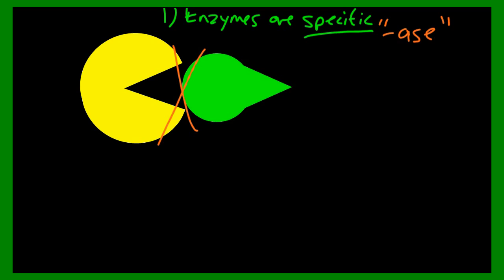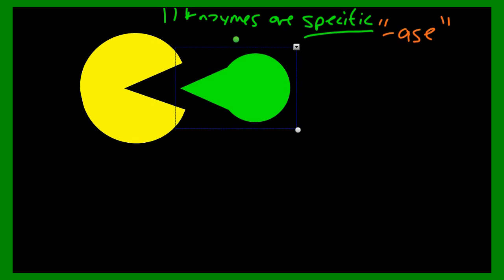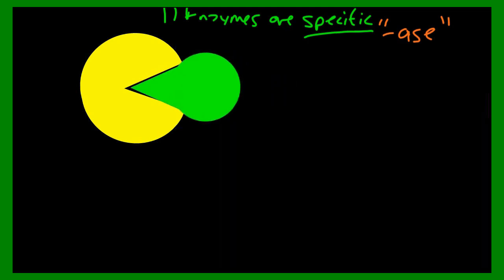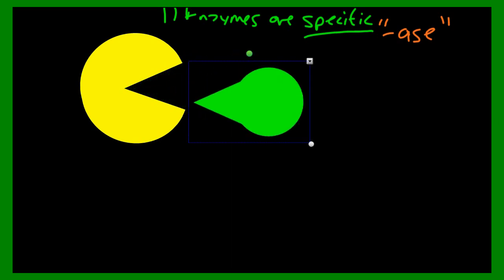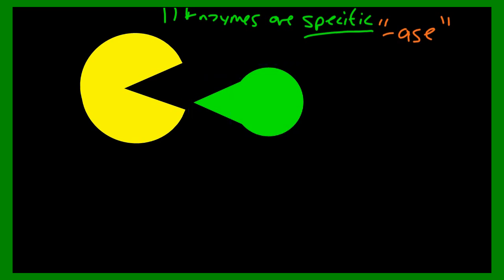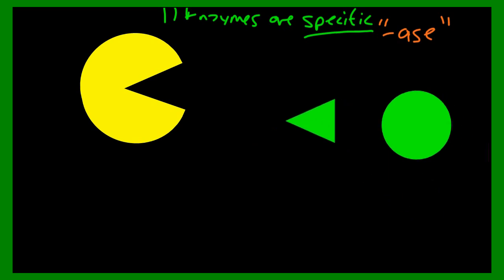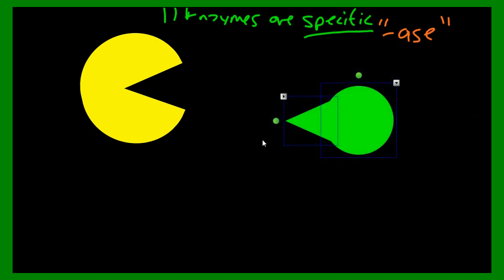Enzymes are specific. This is a Pac-Man ACE enzyme because it looks like Pac-Man. This molecule will not be used by that enzyme if that's the way that molecule works. However, if the molecule has a different shape, that enzyme can use it. When it binds to that enzyme, the enzyme will change shape slightly.